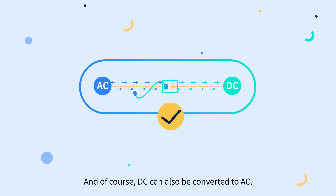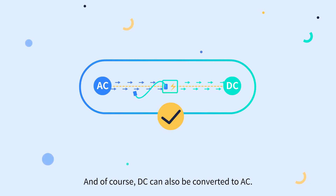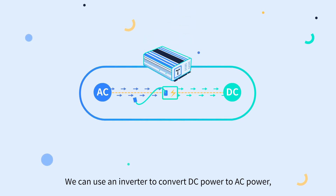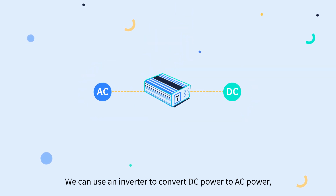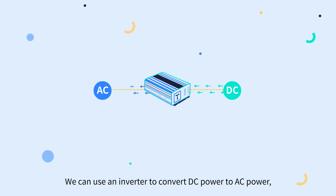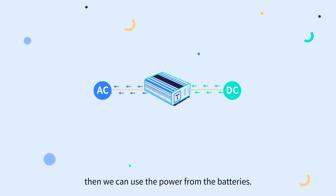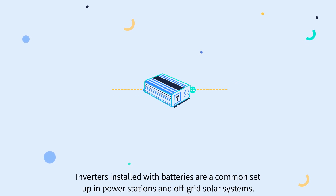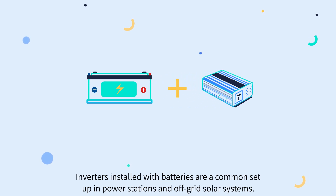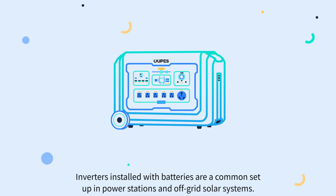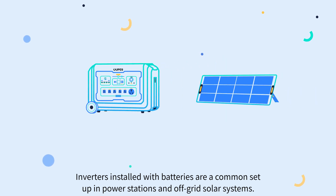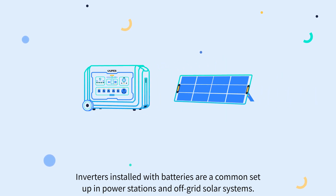DC can also be converted to AC. We can use an inverter to convert DC power to AC power, allowing us to use the power stored in batteries. Inverters installed with batteries are a common setup in power stations and off-grid solar systems.